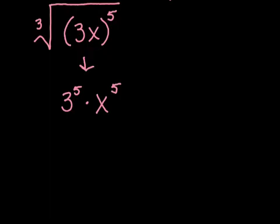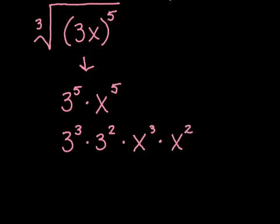So 3 to the 5th is 5 3's multiplied together. So I can think of that instead of 5 of them together in one statement, I can think of that as 3 of them multiplied together. 3 cubed times another 2 of them left over. 3 cubed times 3 squared is going to multiply together to give me 3 to the 5th. Same thing works for x. Instead of 5 x's together in one statement, in one expression there, I'm going to think of it as 3 x's multiplied together, and then another 2 x's multiplied together. So x cubed times x squared, giving me a total of 5 x's multiplied together. This is the amount that I have inside my cube root.